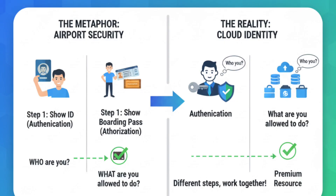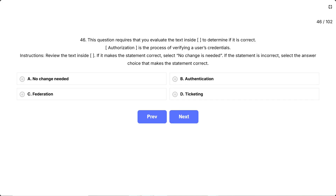Think of going through airport security. First, you show your ID to prove who you are — that's authentication. Then you show your boarding pass to prove what you're allowed to access, like the business class lounge — that's authorization. Authentication equals who are you, authorization is what are you allowed to do.